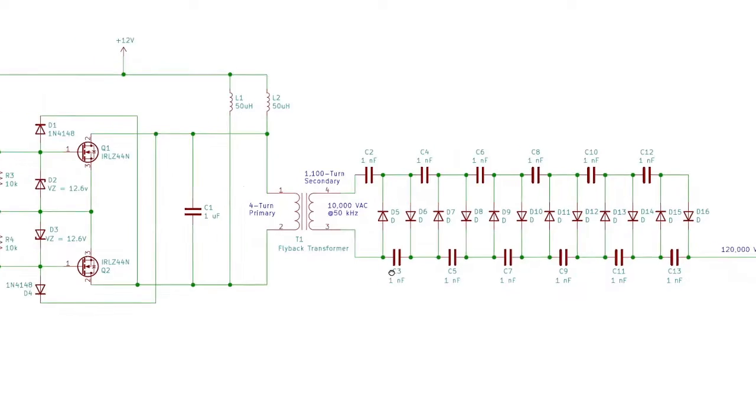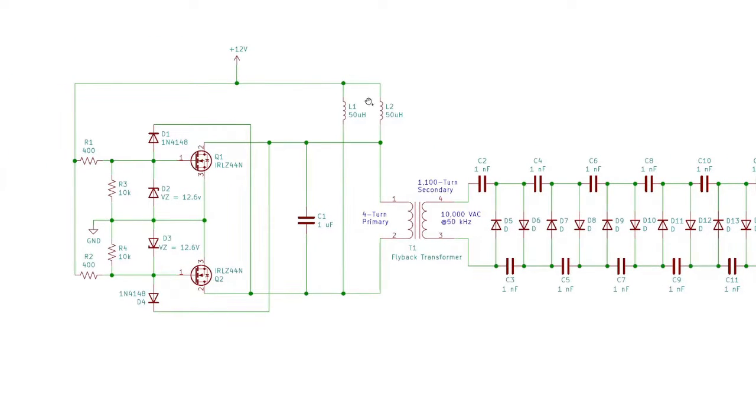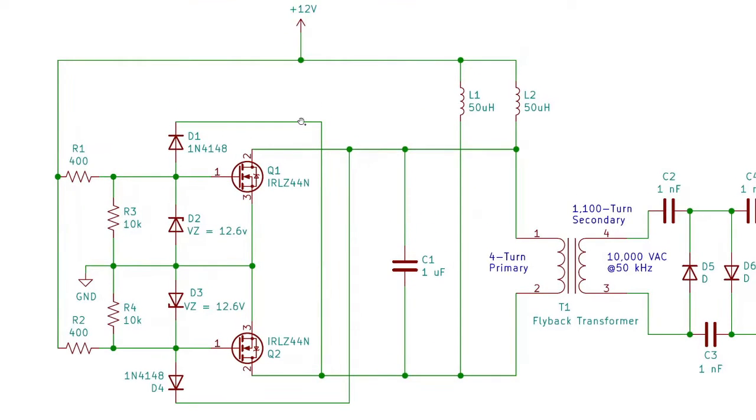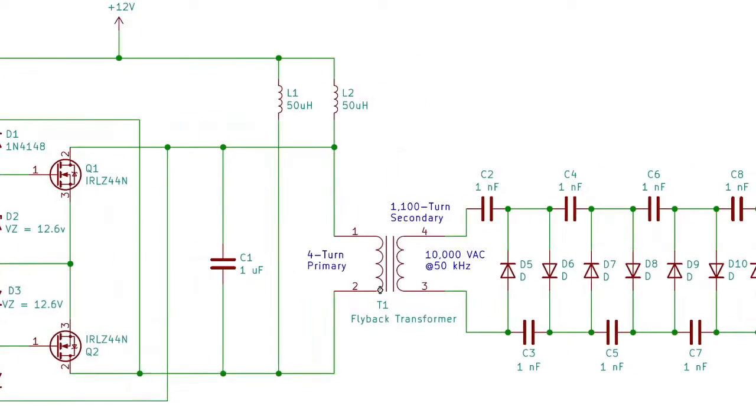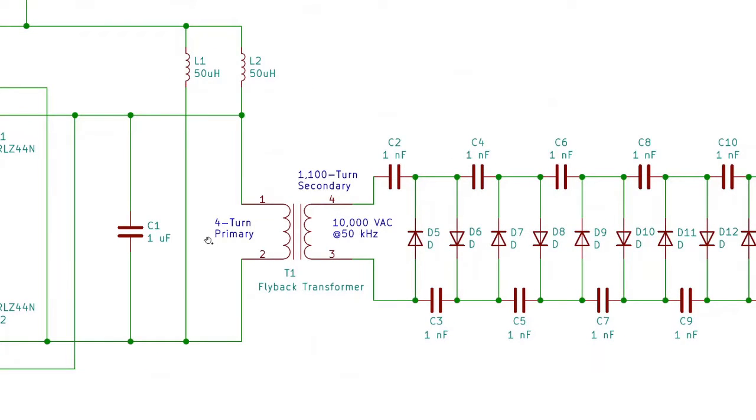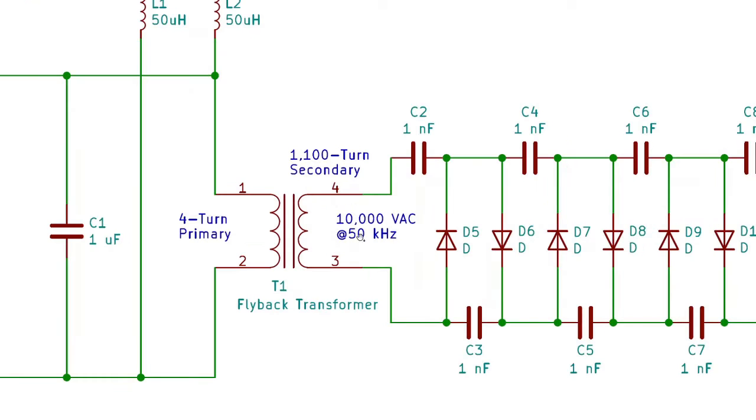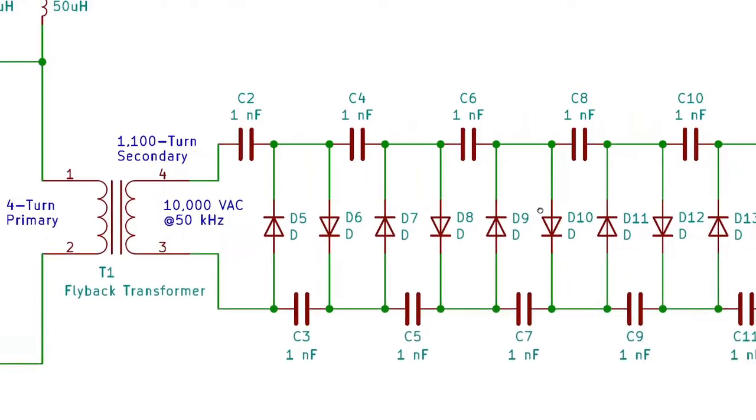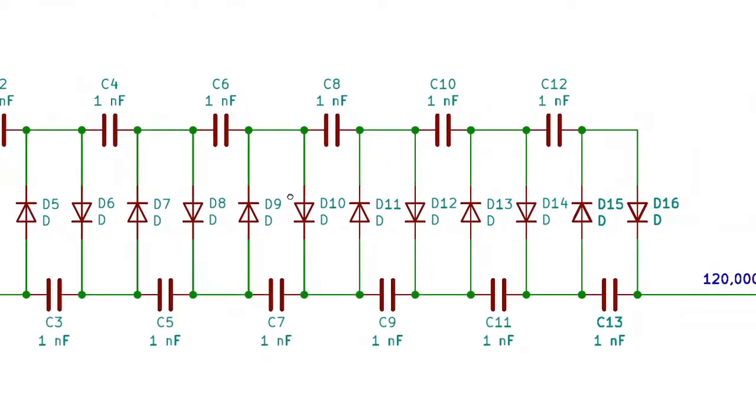The circuit starts with a 12 volt ZVS driver, which is the exact same design as the one I used in my previous video on induction heating. The ZVS driver powers a flyback transformer I built myself, which puts out 10,000 volts of alternating current. That 10,000 volts is then stepped up and rectified by this ladder of diodes and capacitors to create 120,000 volts of DC.